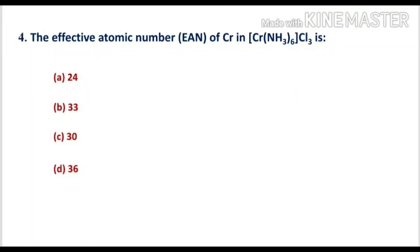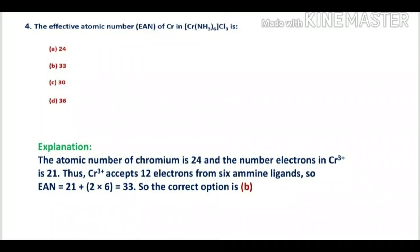Question number 4: The effective atomic number (EAN) of chromium in hexaaminechromium(III) chloride is option A 24, option B 33, option C 30, option D 36. The atomic number of chromium is 24 and the number of electrons in Cr3+ is 21. Cr3+ accepts a total of 12 electrons from 6 amine ligands. So EAN = 21 + (2 × 6) = 33. The correct option is B.